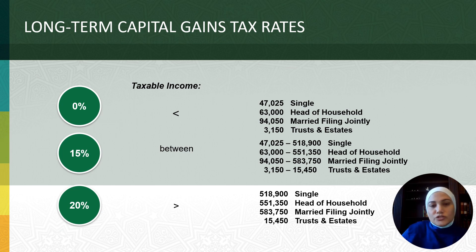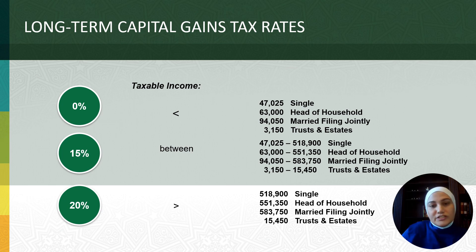On the other hand, short-term capital gains — investments held for a year or less — are taxed at your ordinary income tax rates. One side note: ordinary dividends are treated as ordinary income, while qualified dividends are subject to the same 0%, 15%, and 20% tax rates that apply to long-term capital gains.